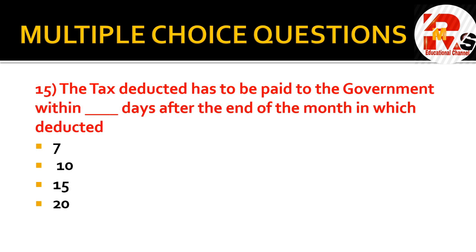The last question: the tax deducted has to be paid to the government within dash days after the end of the month in which deducted. The options are 7 days, 10 days, 15 days, and 20 days. This is a question you need to remember — whenever we deduct tax, we must deposit it to the government within 10 days. So the right answer is 10 days. These were the 15 questions we discussed today.